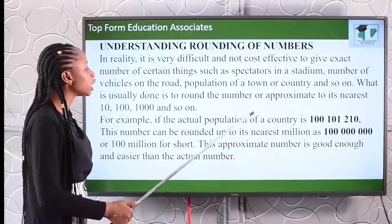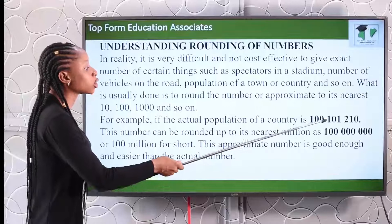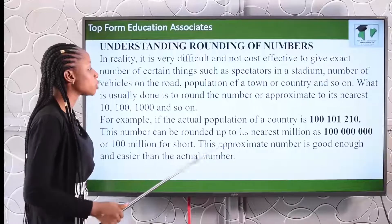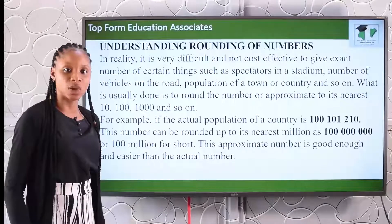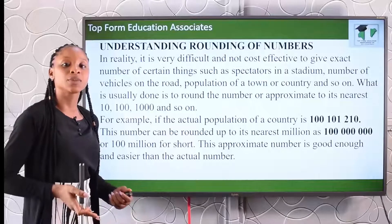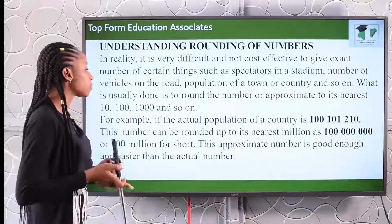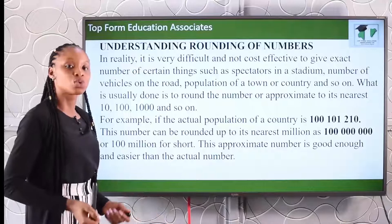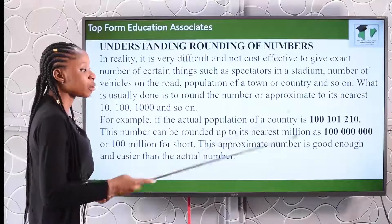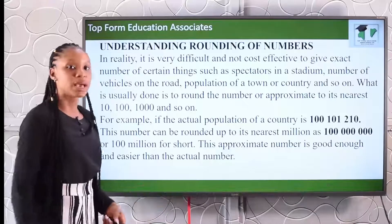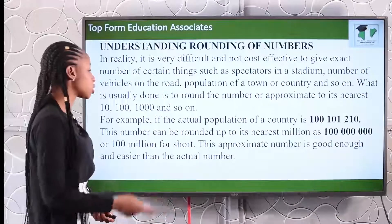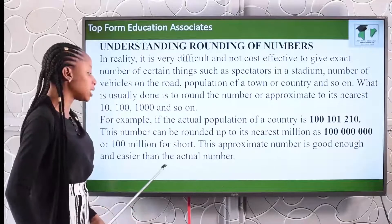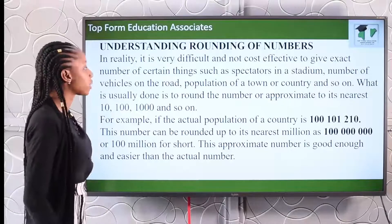For example, if the actual population of a country is one hundred million, one hundred and one thousand, two hundred and ten, this number can be rounded up to its nearest million. You have taken the population census and the figure is 100,101,210. To get the approximate population of that country, you say one hundred million. This approximate number is good enough and easier than the actual number.